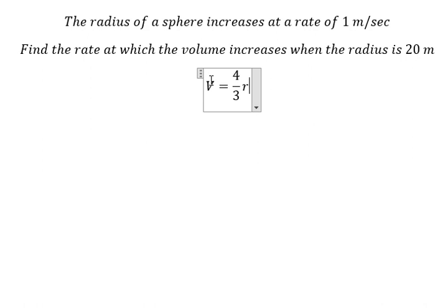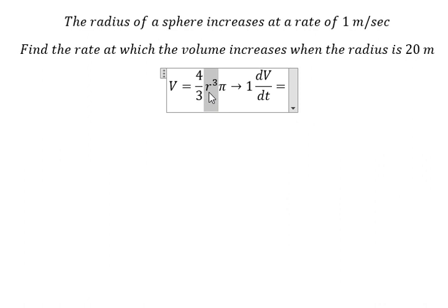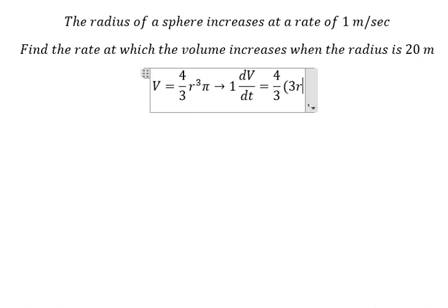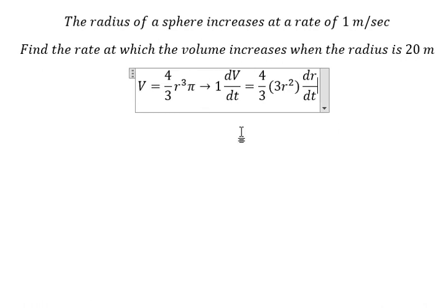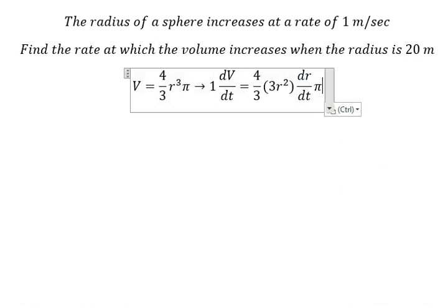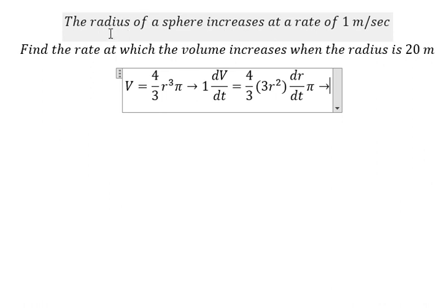We need to take the first derivative for both sides. This gives us dV/dt = 4/3 π times 3r² times dr/dt, which simplifies to 4πr² dr/dt.